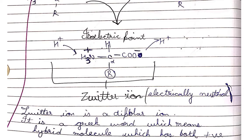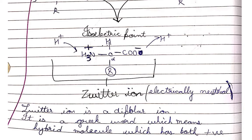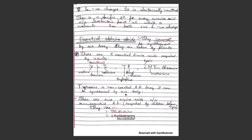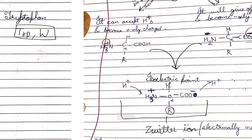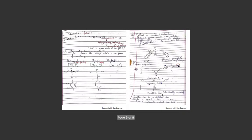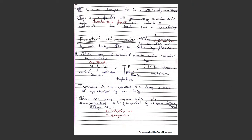Zwitterion is a Greek word which means hybrid molecule, which has both positive as well as negative charge, and it is electrically neutral. There is a specific pH for amino acid called isoelectric point where the charge on the ions, which have both positive and negative charges, results in no net potential charge.